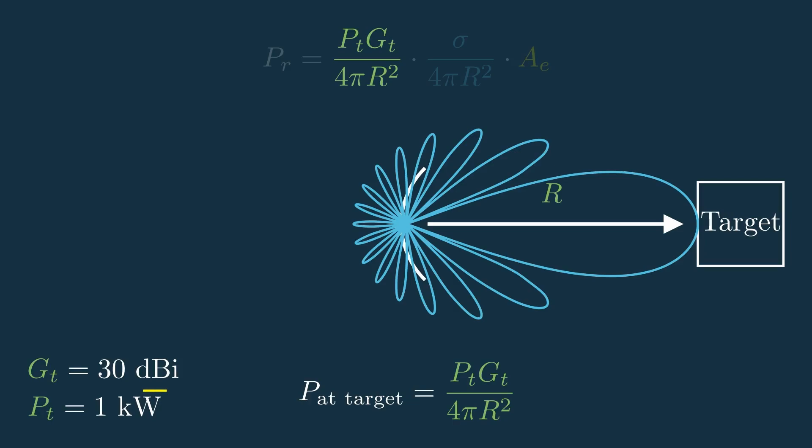So if we're transmitting 1 kW of power with an antenna gain of 30 dBi and a target at a range of 1 km, the power seen at the target would be about 0.08 watts per meter squared. Pretty small even with that high gain antenna and large output power.